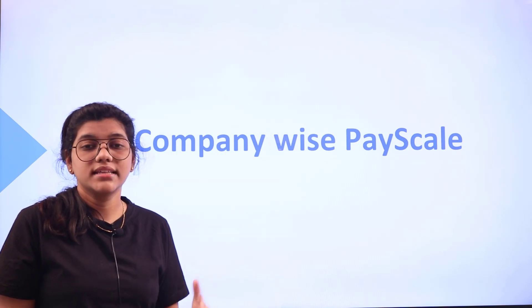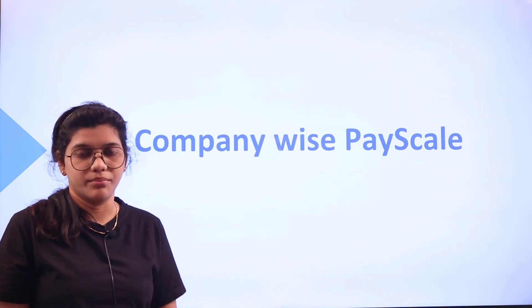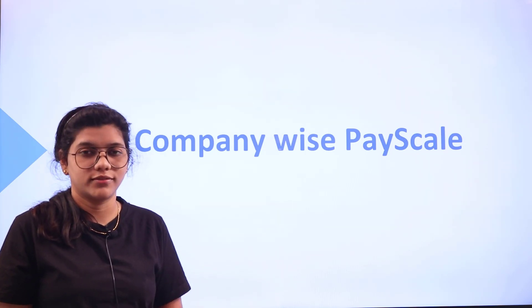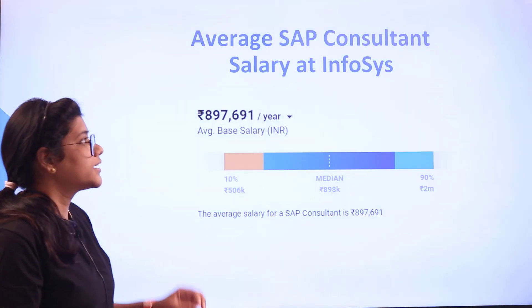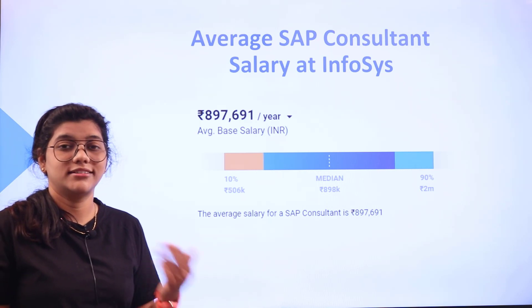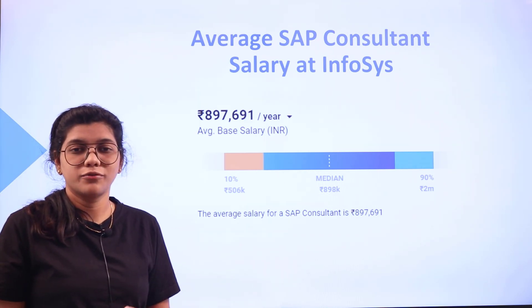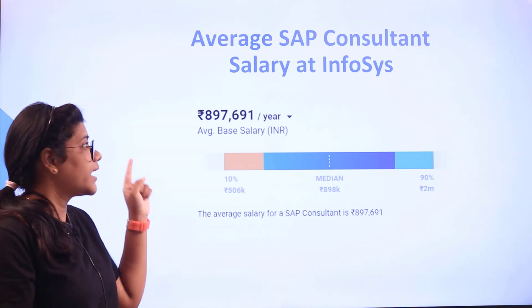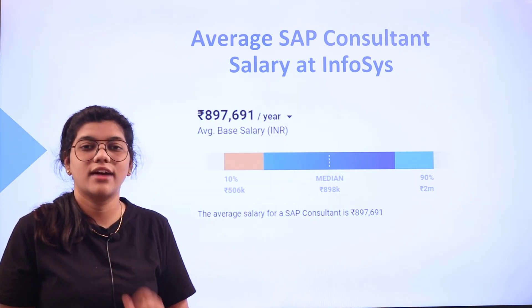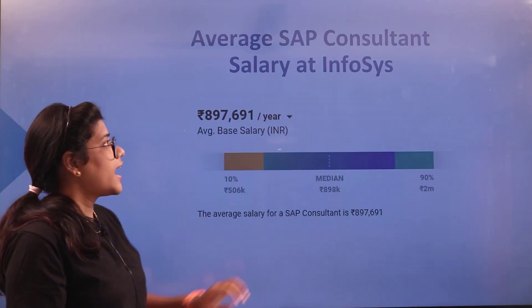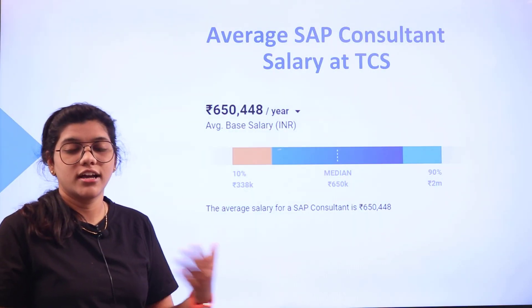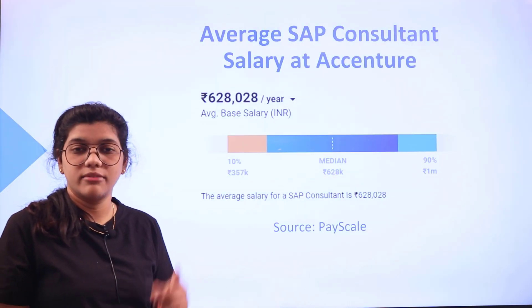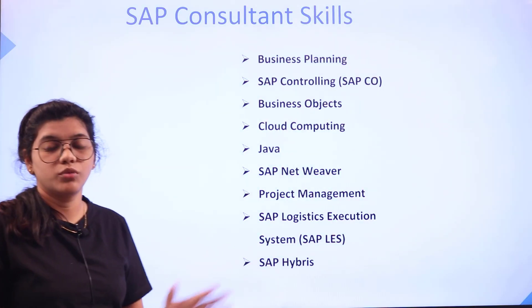Moving forward, we will now look at how companies pay SAP consultants. This is quite an essential role in every company. The first company is Infosys, the dream destination of many aspirants. If you land as an SAP consultant at Infosys with the right set of skills and specializations, you can be paid eight lakhs ninety-seven thousand per annum. Next is TCS at six lakhs fifty thousand, and Accenture at six lakhs twenty-eight thousand per annum.